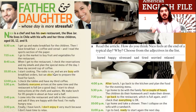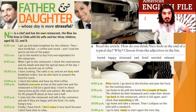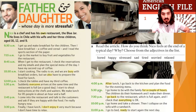10:30 a.m.: I start cooking. The radio is on and we are busy with breakfast orders but we also have to prepare food for lunch. 12 p.m.: I check the tables and have my third coffee. 1:30 p.m.: Suddenly everyone arrives at the same time and the restaurant is full. On a good day I start to shout instructions at the chefs and waiters — we make lunch for 85 people in about an hour and a half. 2:45 p.m.: I come into the restaurant and talk to the customers and ask if they are happy with the food — I'm really hungry now. 3:30 p.m.: Finally I have lunch. I don't enjoy it very much because I don't have time to relax.